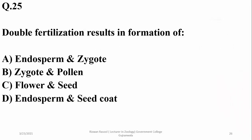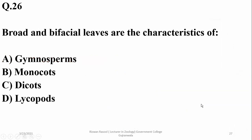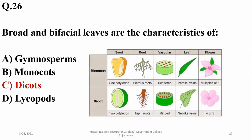Ovule is a modified megasporangium; an integmented megasporangium is known as an ovule. Double fertilization results in the formation of endosperm as well as zygote. The endosperm is a nutritive tissue while the zygote forms an embryo. Broad and bifacial leaves are characteristics of dicot plants; monocots have elongated leaves with parallel veins, while dicots have net-like veins and broader leaves.